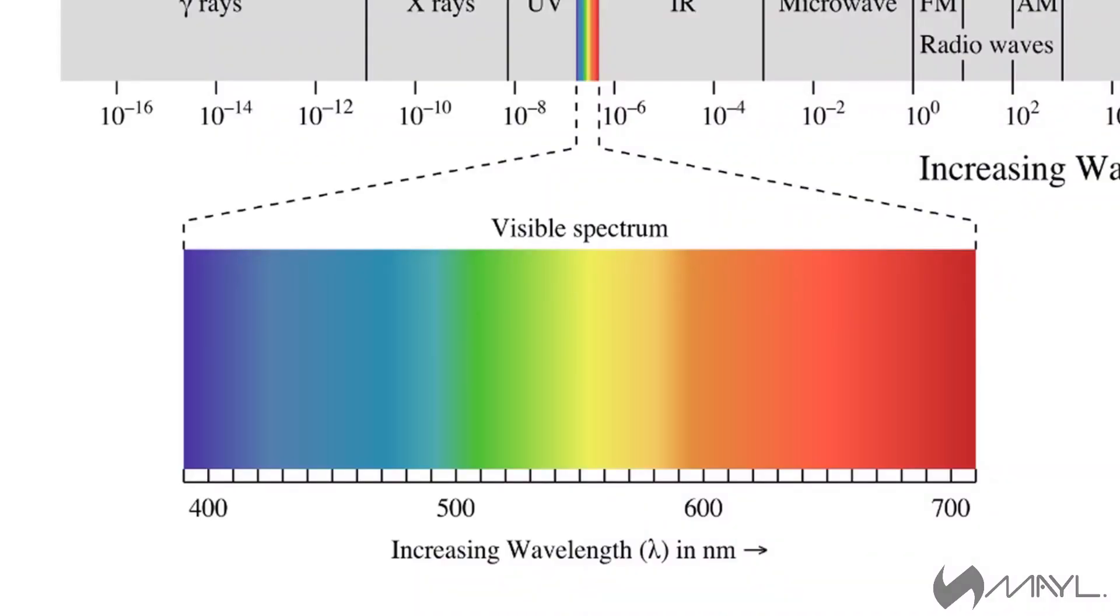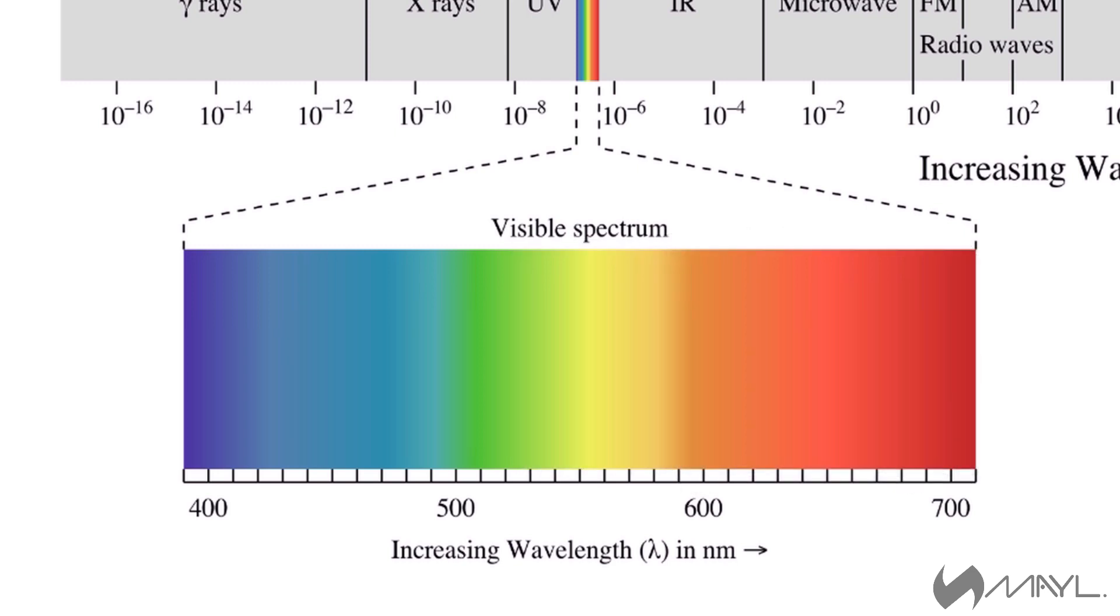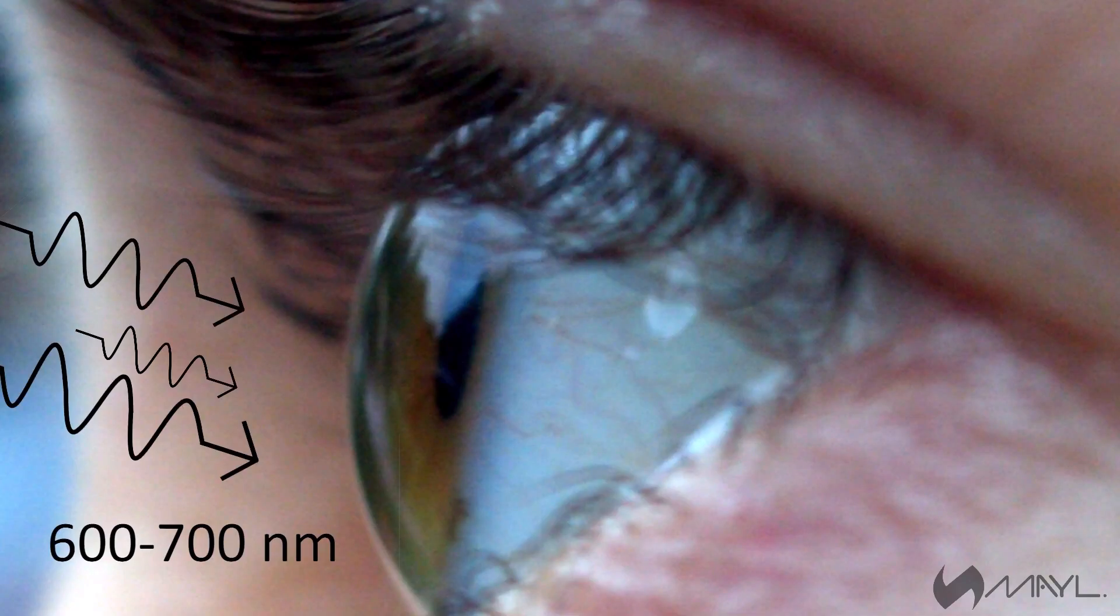So say the object absorbs this part of the spectrum, transmits this part, and reflects the rest. The light that is reflected off that surface will contain only these wavelengths, and only those wavelengths of light reach our eyes.